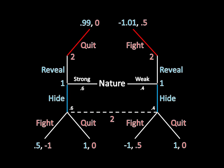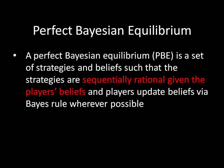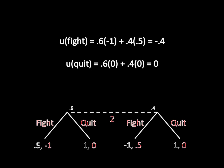Now we can go back to our definition for perfect Bayesian equilibrium and figure out what it tells us about the strategy Player 2 needs to adopt. Specifically, Player 2 needs to choose the optimal strategy given her belief. We have that belief, and now we just have to do a simple expected utility calculation. Her expected utility for fighting involves two different probabilities and two different payoffs.